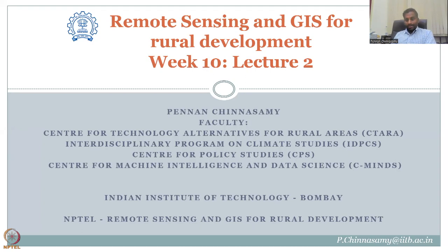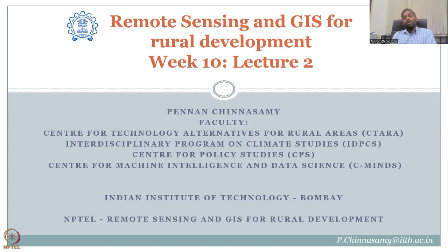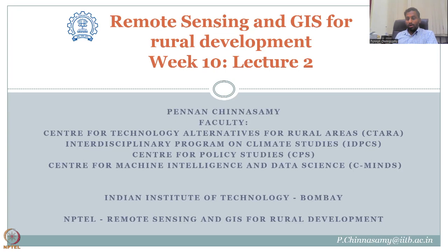In weeks 9 and 10, we are looking at specific remote sensing data that can be used for understanding land available for rural development, in priority agriculture, and how expansions can happen without compromising the natural resources. We were looking at LULC change, and one of the key changes is multi-cropping, which includes Rabi and Zaid cropping. If it is just monsoon or rain-fed crops, we won't have much issues.